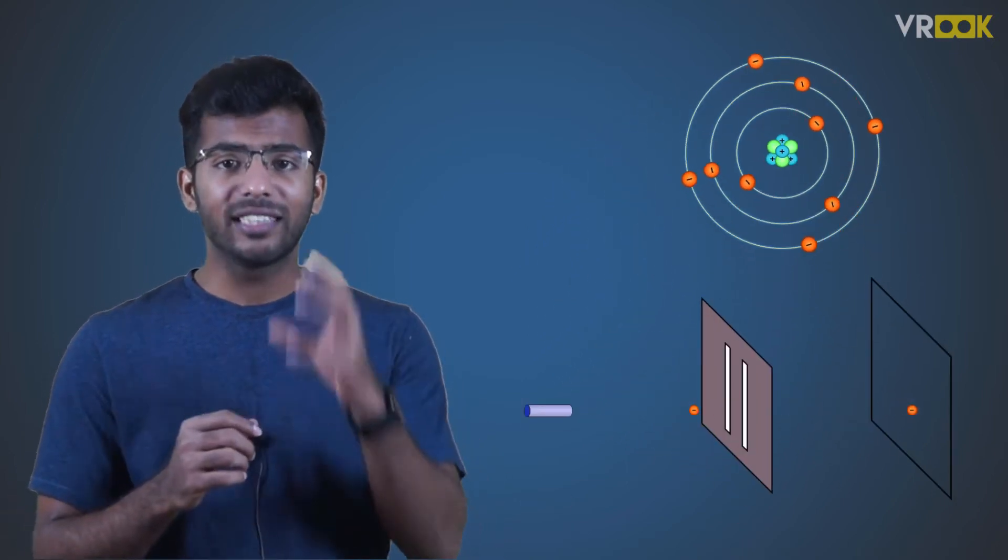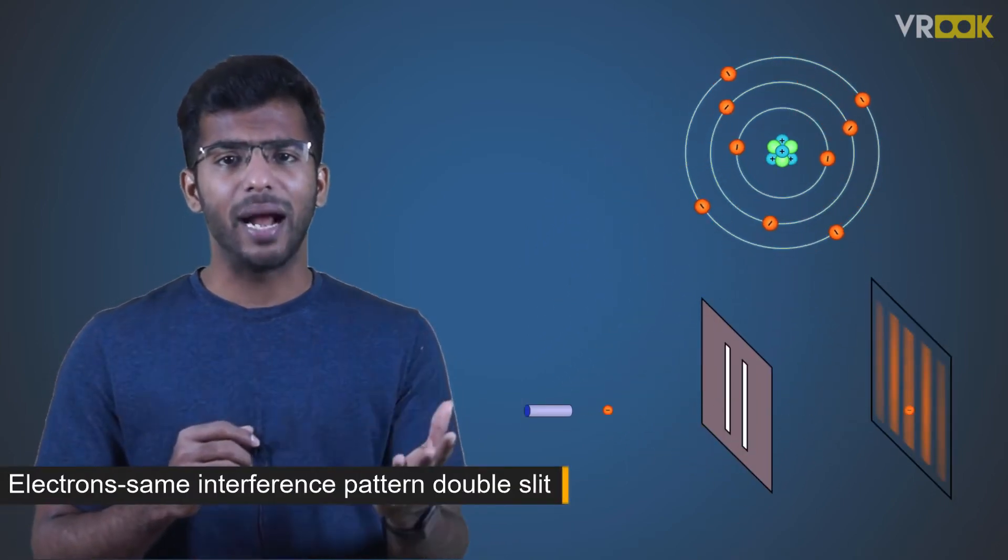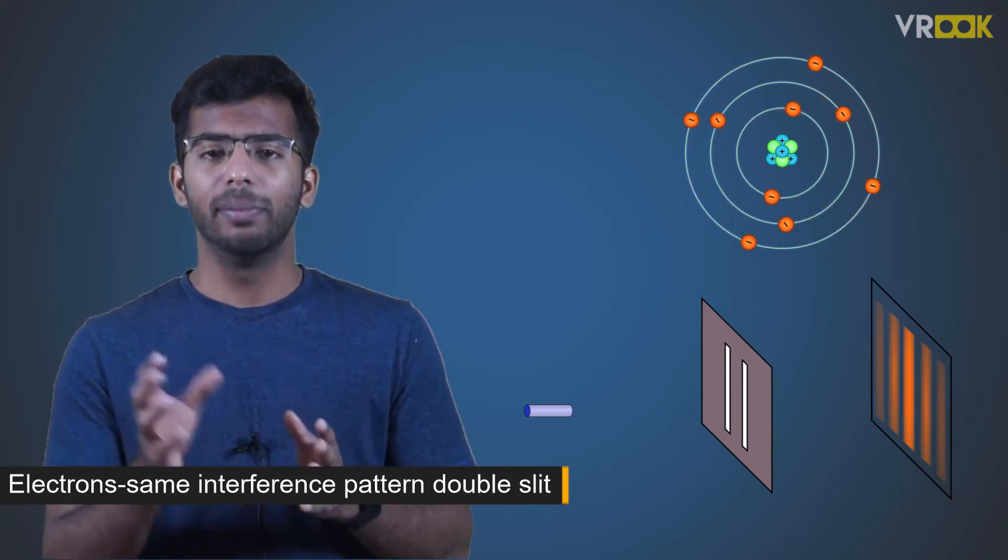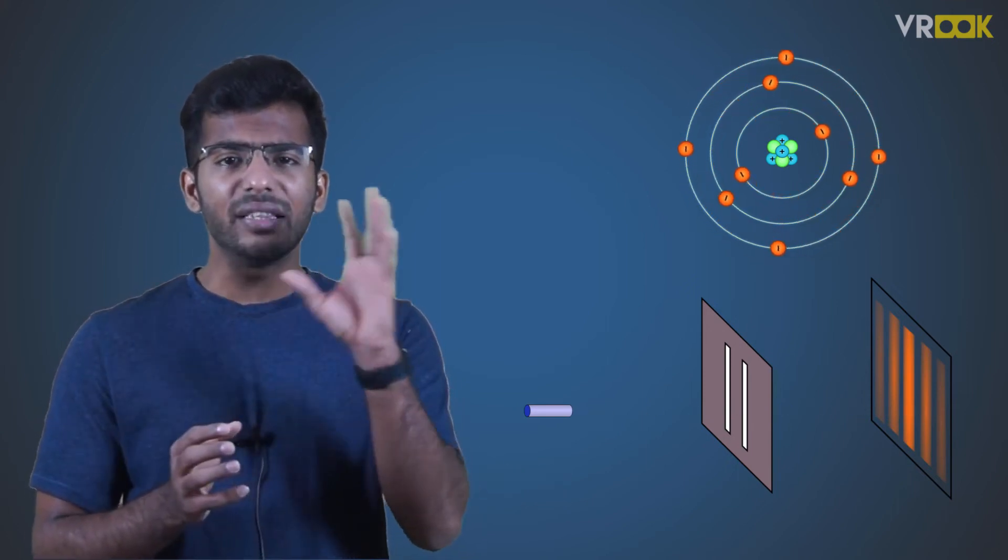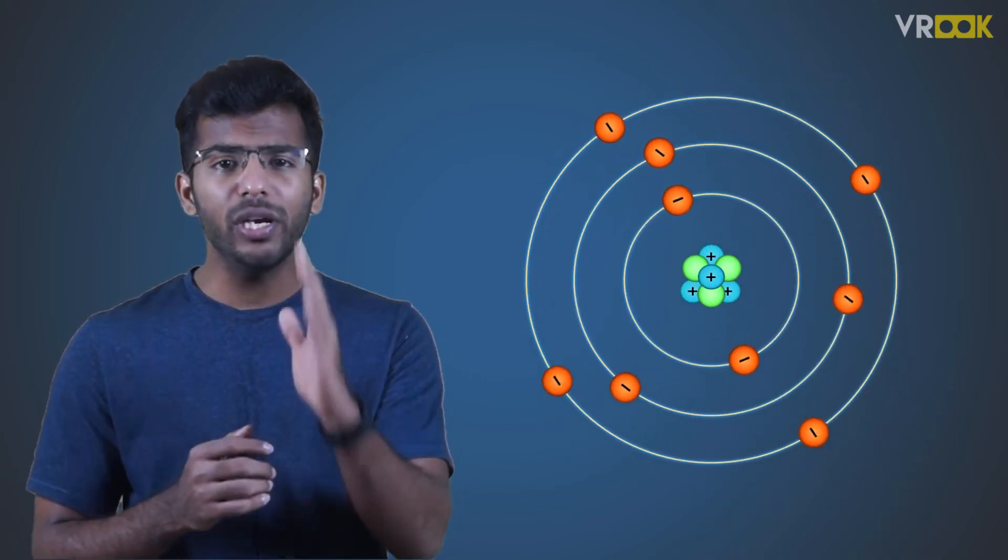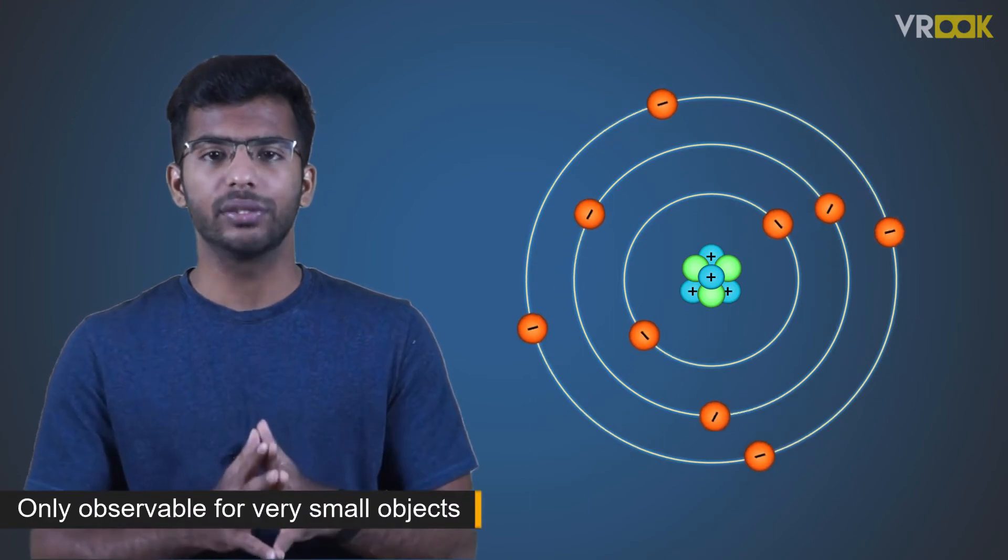Electrons, for example, exhibit the same interference pattern as light does when they are incident on a double slit.